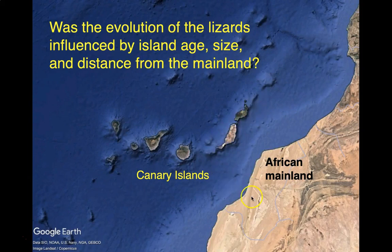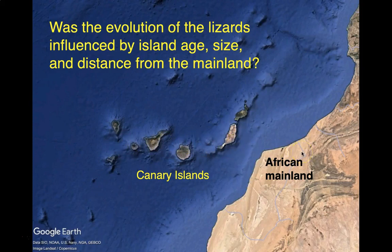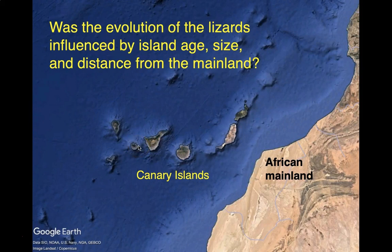If we zoom in, here are the islands where the lizards are found. Some islands are closer to Africa, some are farther away. There is a linear relationship between the islands and the African mainland where the ancestor of the lizards is from. Islands also vary in size, and there will be a relationship between island size, distance from the mainland, and the age of the islands. Pay attention to the information in the handout when you get to those questions, because you'll have to think about that information to make phylogenetic trees and use the data.